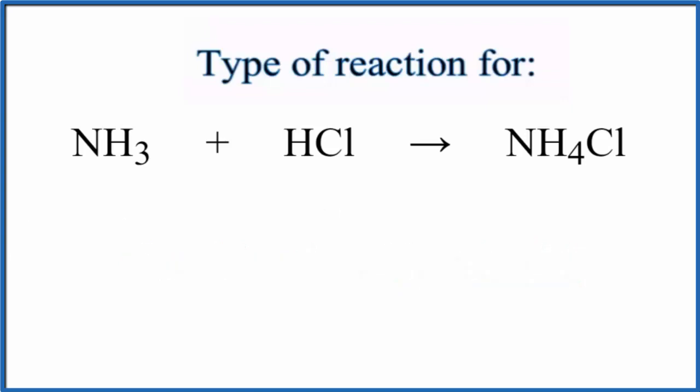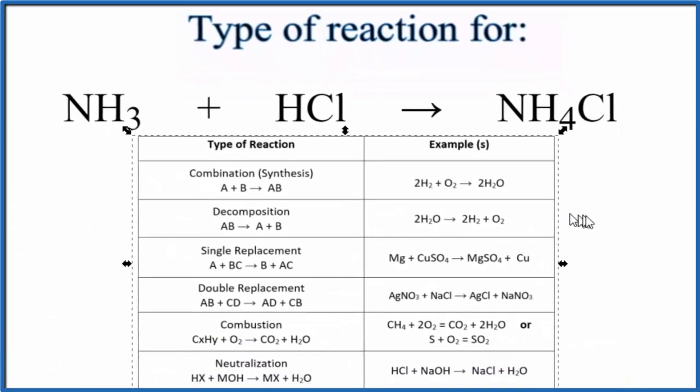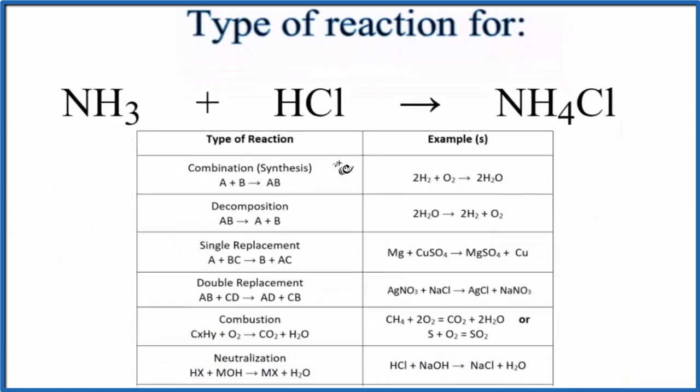If we look at this table here of common chemical reactions, right here is our combination or synthesis. It follows this format: A plus B yields AB. So we could consider this substance A, substance B. They combine to form AB, a combination or synthesis reaction.